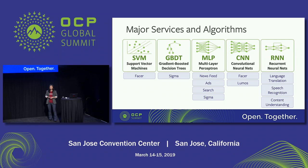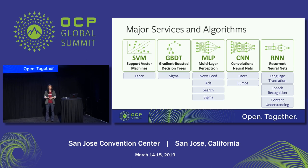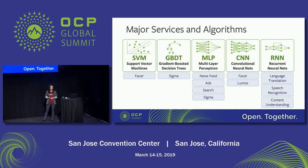These are our Facebook major AI services and algorithms. One thing I want to share is that it doesn't always involve deep learning. We have some very good non-deep learning services, such as Support Vector Machine. SVM is something we're using for phase detection, and it works pretty well. And there are also Gradient Boosted Decision Trees, GBDT. We use it for our Sigma service — Sigma is an anomaly detection framework we use for, for example, site integrity, spam detection, and improper content detection.